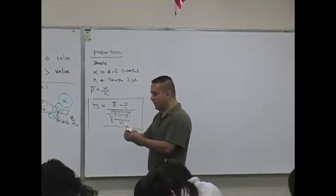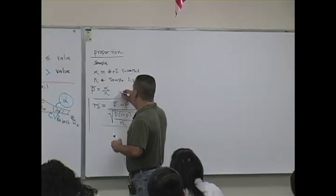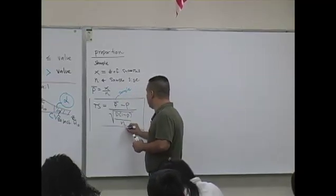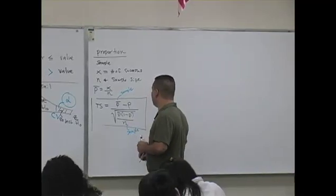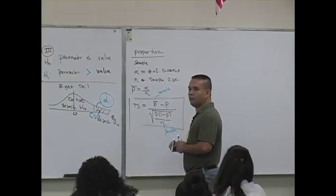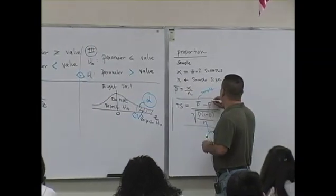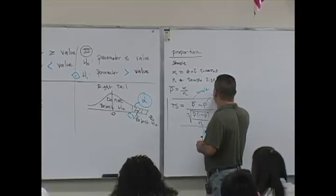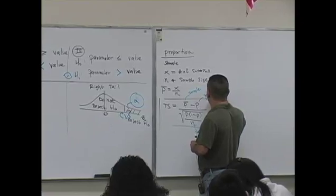P hat, where do you get p hat? P hat is from your sample information. Where do you get n? That's from your sample. And where is this p from? This is going to be from your setup of the hypothesis.